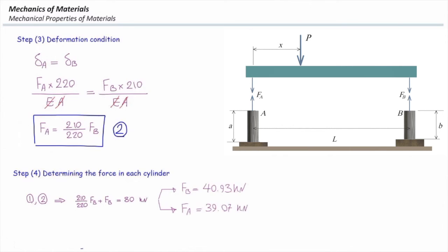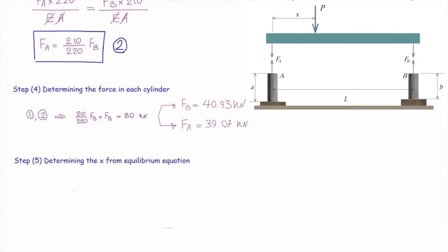So we have determined the force in each of these two cylinders, and in the very last step, we can determine where should be the position of that 80 kilonewton force to have F_B and F_A as required. To determine that, we use sum of the moments about any point, say A.